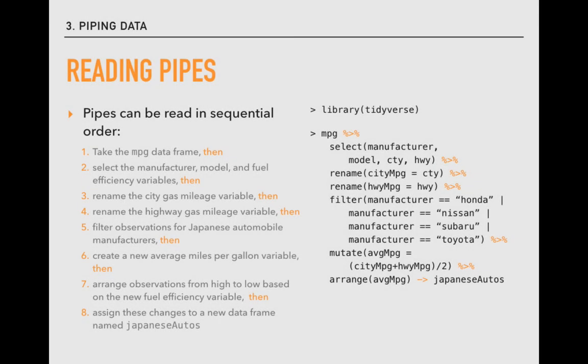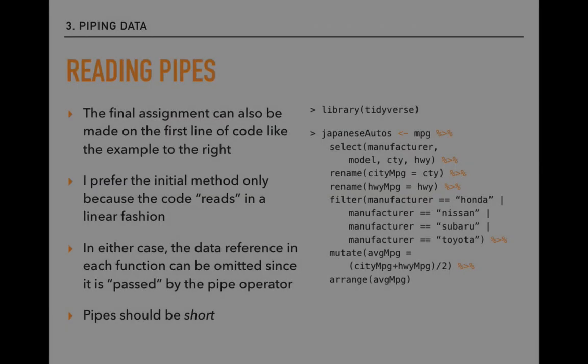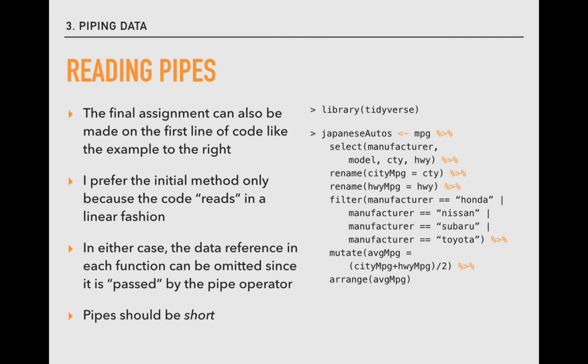Every time we say the word then, we insert a pipe operator. Note that the assignment occurs in the opposite way, with a right-facing arrow. I prefer this method over assigning data as we do here, where the assignment occurs first. Assigning the data last makes the code read in a more linear fashion. Also note that we make no reference to the source data frame after the initial call, step one, where we make reference to MPG.